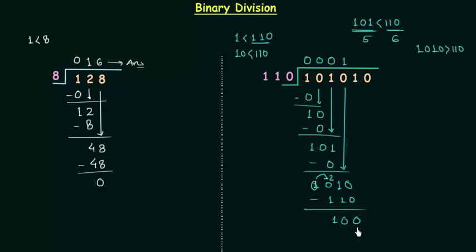So we have 100 as the remainder and this 1 will now come down and we have 1001. So 1001 is again greater than 110.